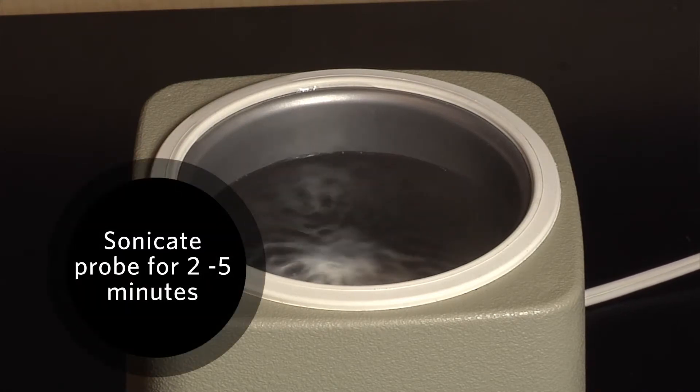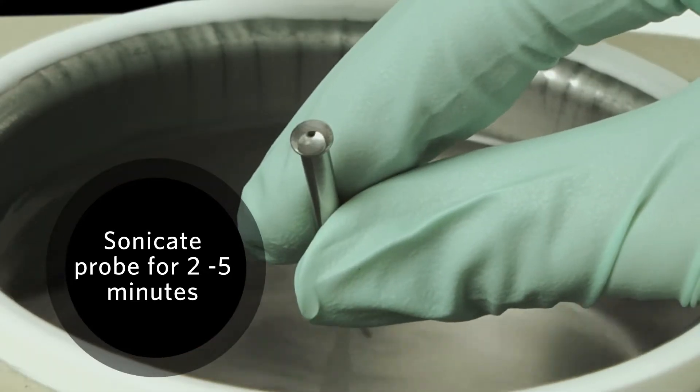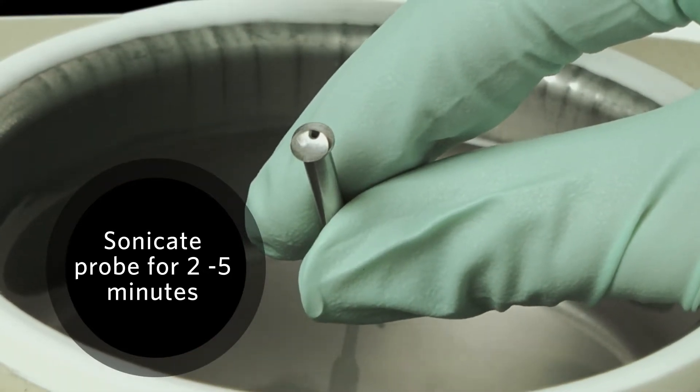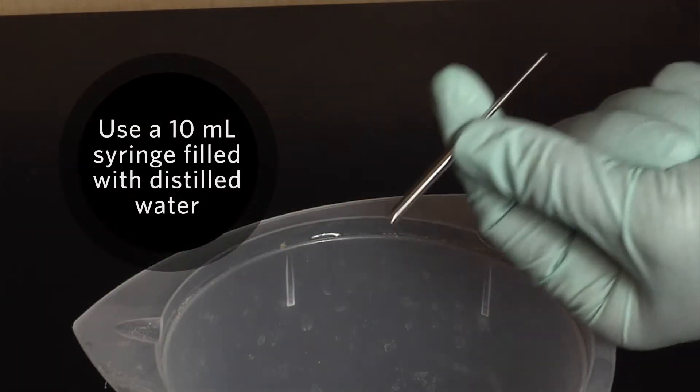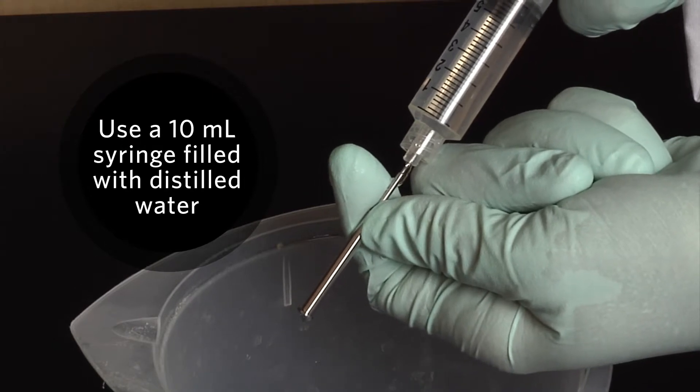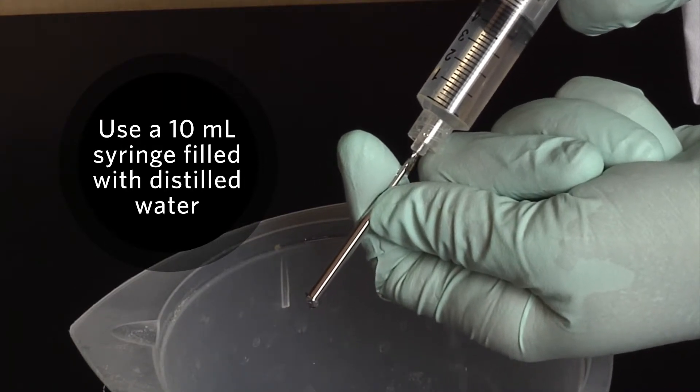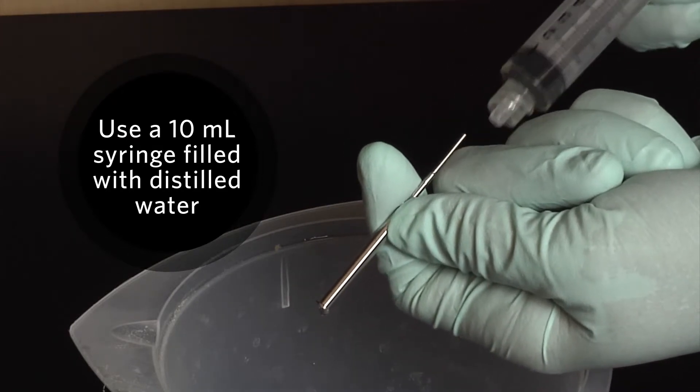Once the probe is out, you can clean it in two different ways. Either place the probe tip down into a bath sonicator for two to five minutes, or use a 10 milliliter syringe attached to the tip of the probe so you can flush from the tip towards the top. Either of these methods should dislodge any debris clogging the tip.